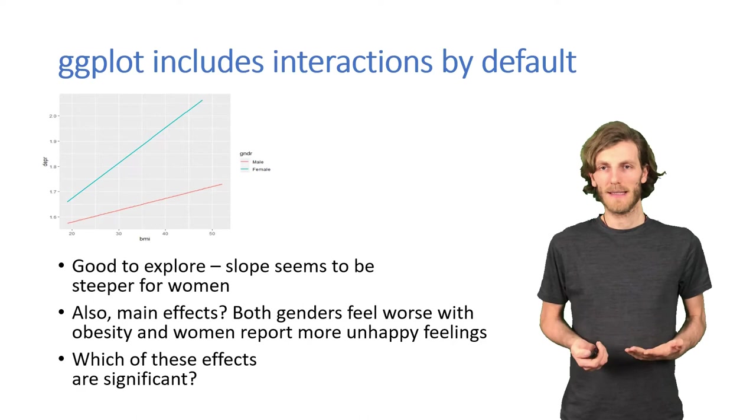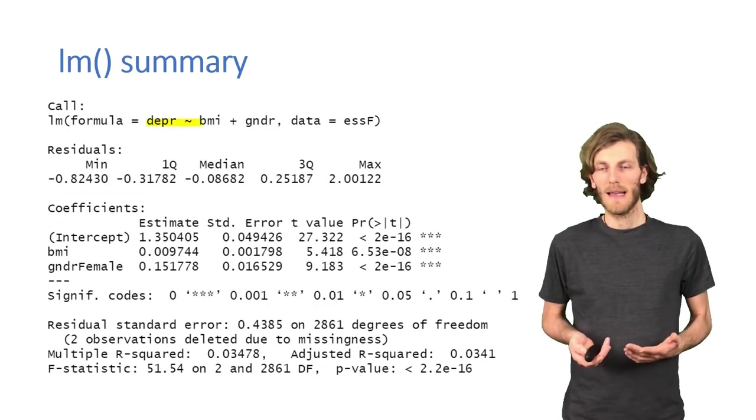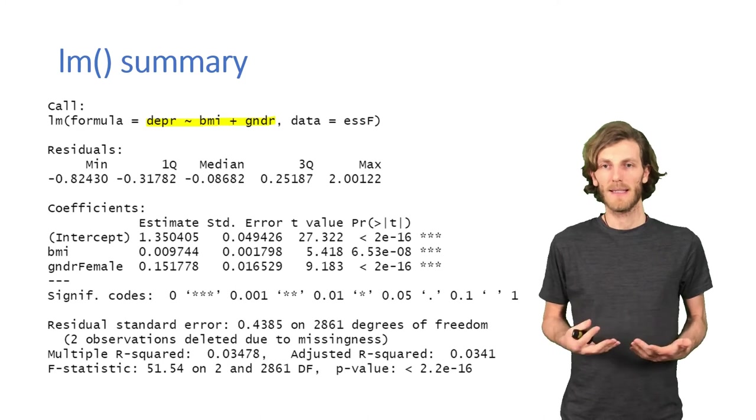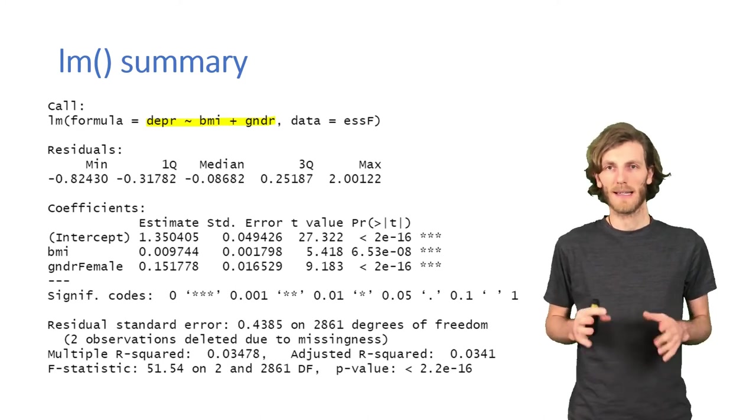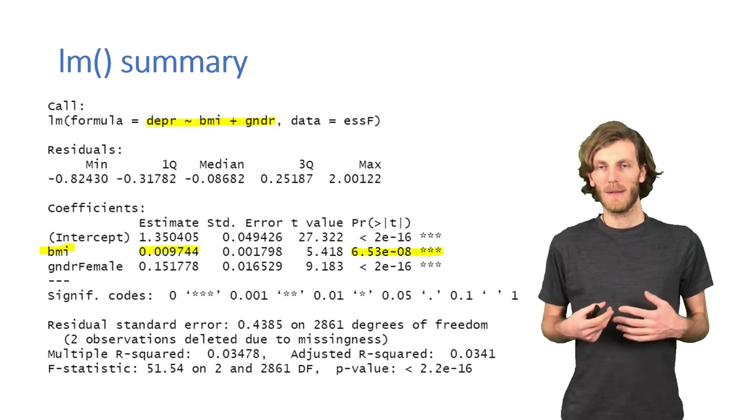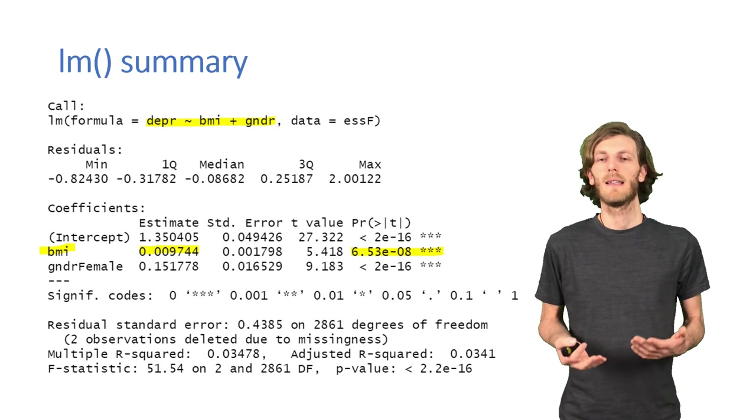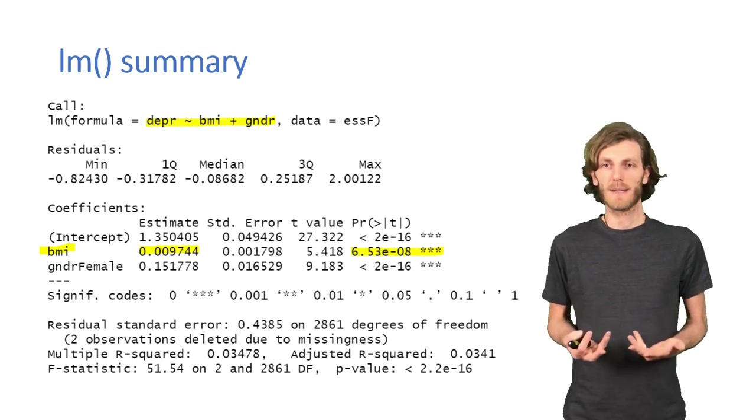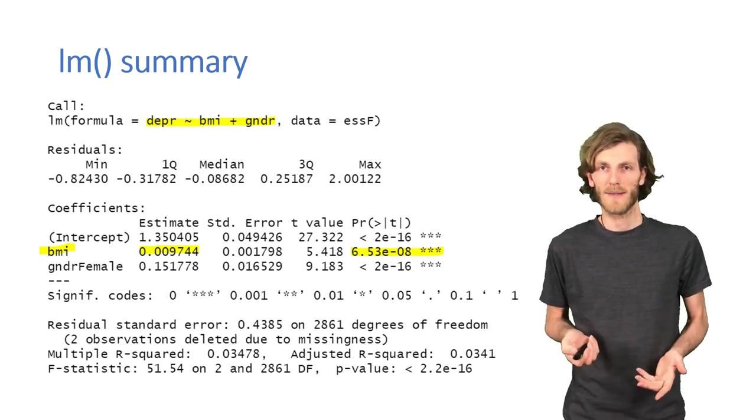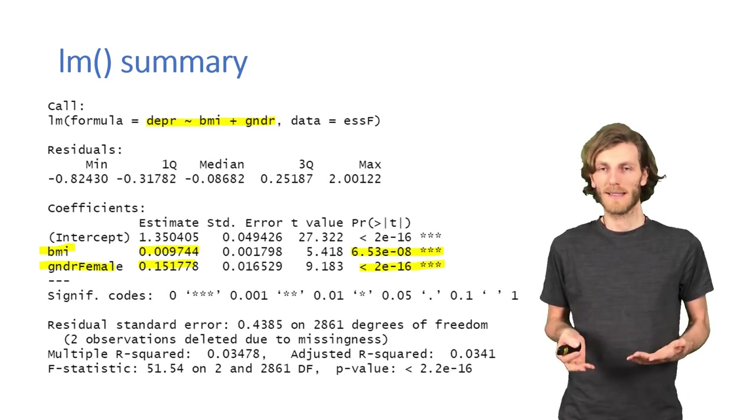In a first attempt, we might just do it by adding the two predictors into the model, neglecting an interaction. If we do that, we get a model output that suggests that body mass index predicts a greater frequency of experiencing negative emotions. So does being female, both highly significant.